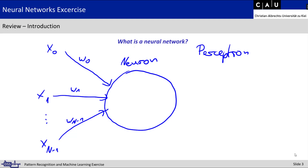Inside the neuron, we have a special activation function that processes the specific inputs — for example a linear function. The computation is x times w, and afterwards we get one output, for example h of 0. This is the basic idea of the perceptron: we have inputs, calculate some values, and get an output.